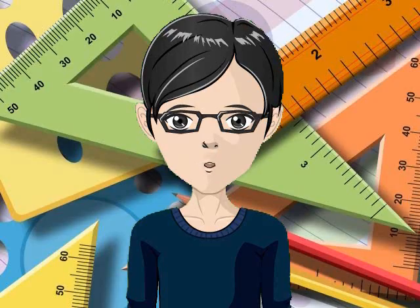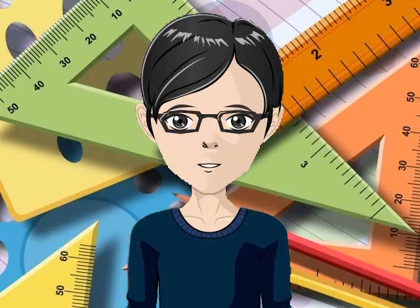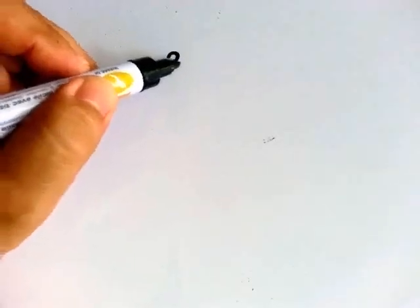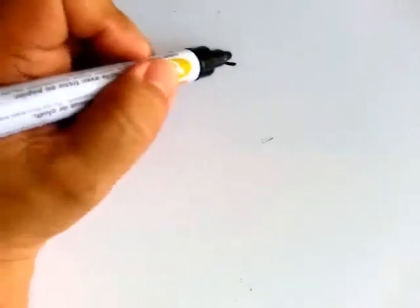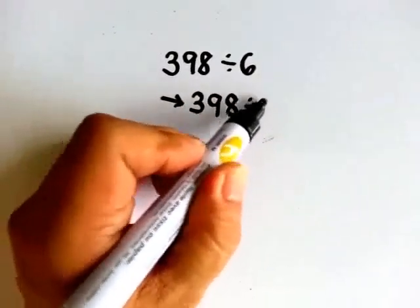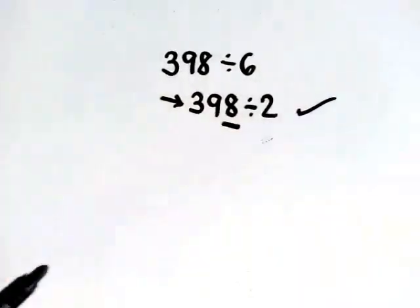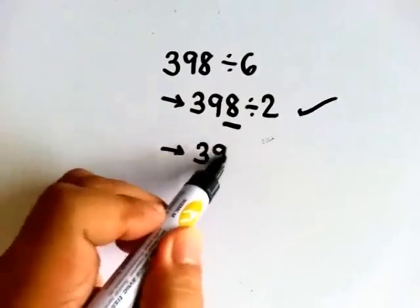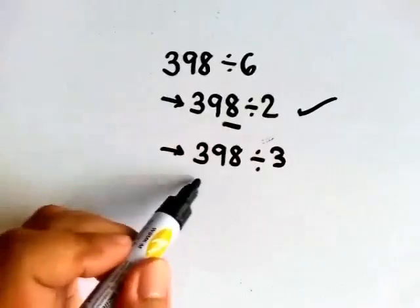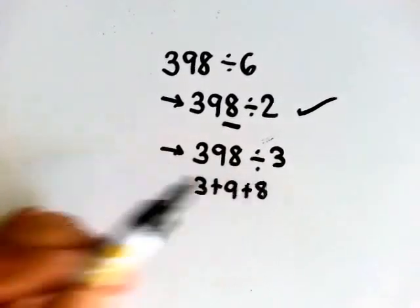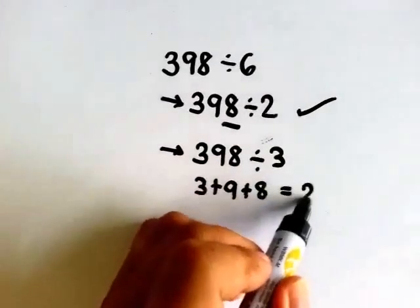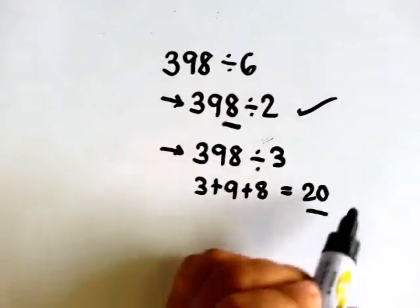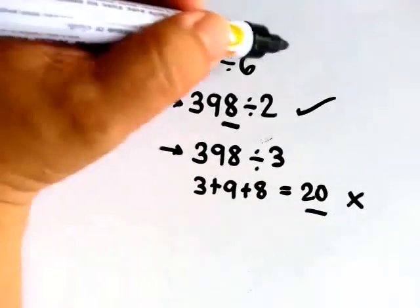If you find these rules long or hard, eto magdivide ka na lang by 6. Another example: is 390 divisible by 6? Is it divisible by 2? Is it even? Yes, so it is divisible by 2. Is it divisible by 3? We add the digits: 3 plus 9 plus 0 equals 12. Wait — 3 plus 9 plus 8 equals 20. 20 is not divisible by 3. So 396 is not divisible by 6.